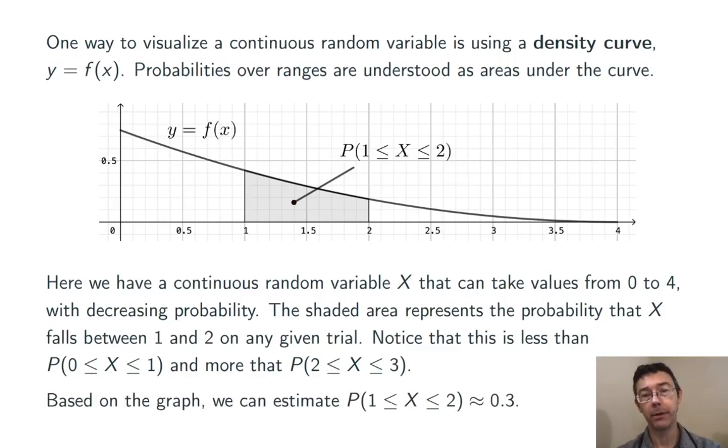We can estimate the probability that x falls between 1 and 2 by estimating the area of that shaded region. In this case, I got about 3 tenths. So there's about a 30% chance that x falls between 1 and 2 on any given trial.